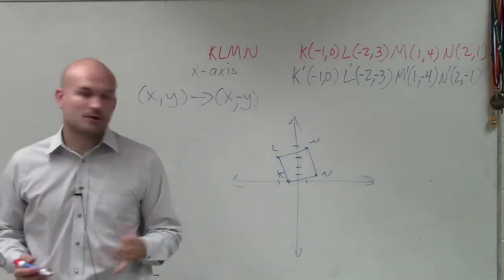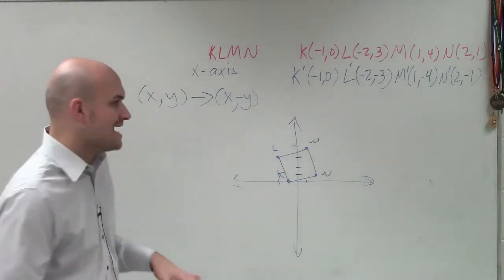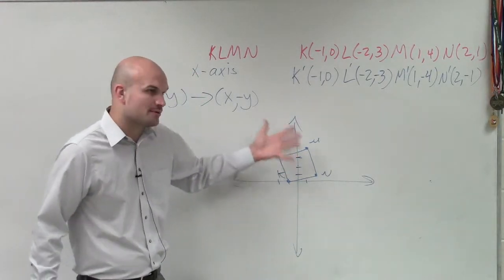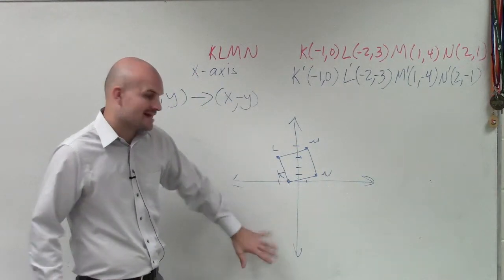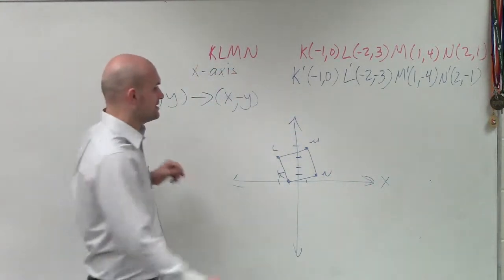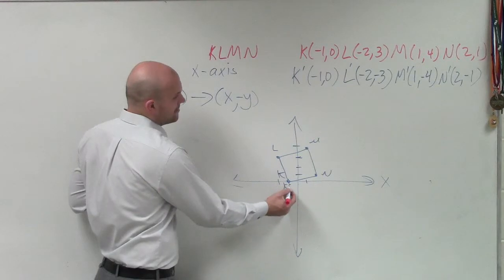So now, if I'm going to reflect this over the x-axis, you can see, Guillermo, this graph is now just going to be reflected over this x-axis, because remember, this is the x-axis. I can also just plot these coordinates. So now, it's still at negative 1, 0 is k prime.